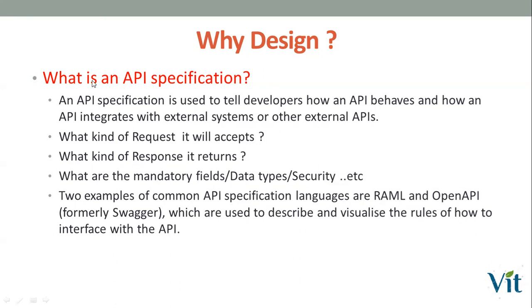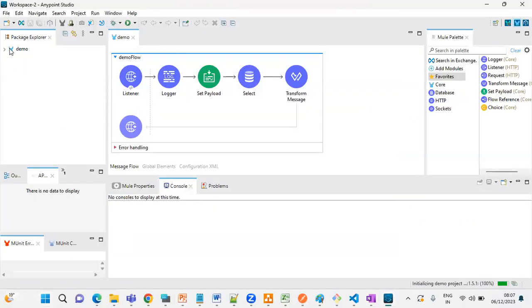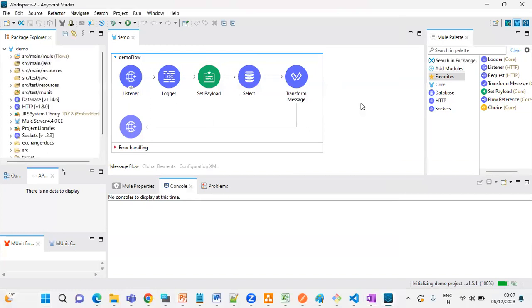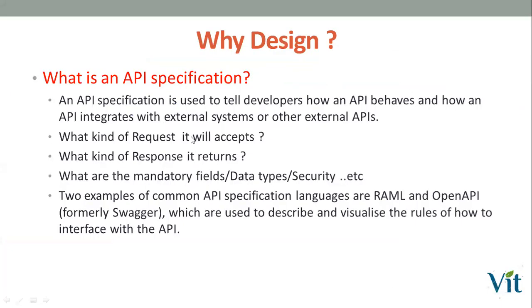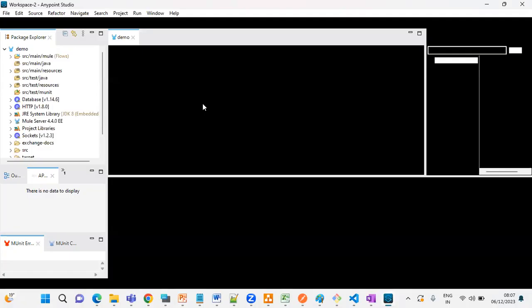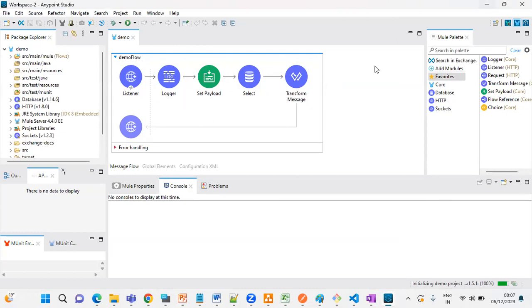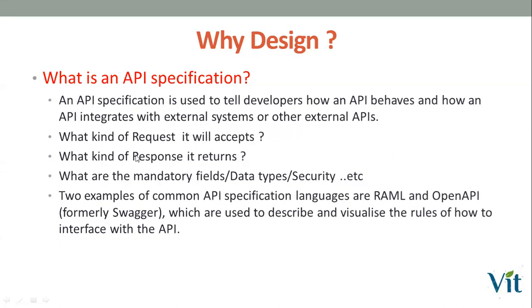Before going to construction, you need a design plan — just like a house construction plan. By seeing that plan, you can easily build your home. The same way, we can build an API directly, but if we design it first, it will automatically draw the flows. The user can understand what kind of input to provide and what kind of response they will get.